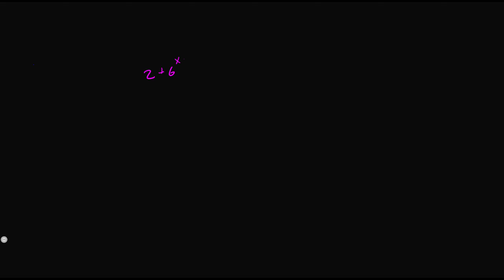Let's look at one more example before we end the video. We have 2 plus 6 to the power of (x minus 3) is equal to 49. We subtract 2 from both sides to get 6 to the power of (x minus 3) equals 47. Now we take log base 6 of both sides, so x minus 3 equals log base 6 of 47, giving us x equals log base 6 of 47 plus 3.